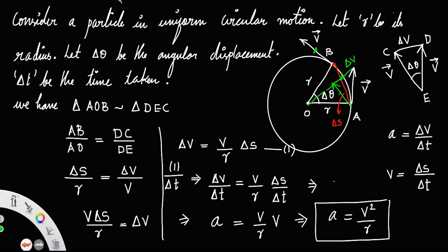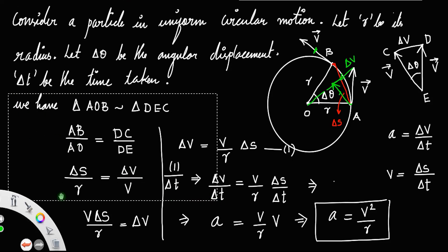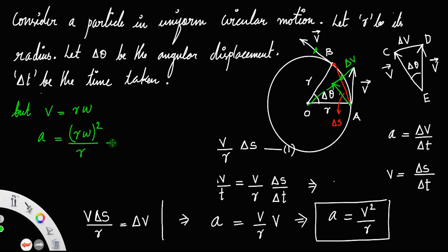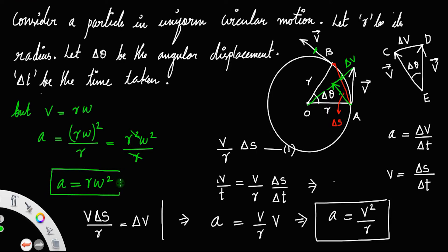Now, we already know that V equals R omega. If you substitute it in the expression a equals V²/R — writing R omega in place of V — you get R squared omega squared divided by R, which simplifies to R omega squared. So the two expressions for centripetal acceleration are a equals V²/R and a equals R omega squared.